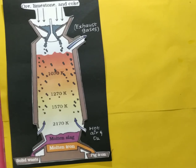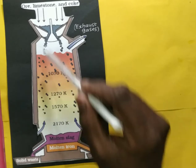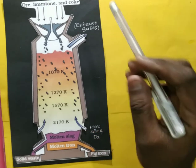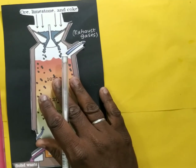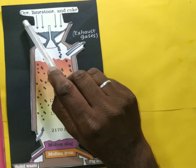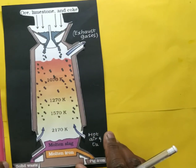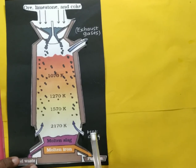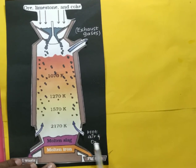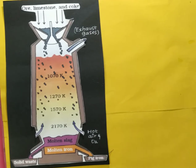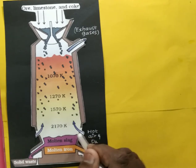What is the use of blast furnace? This is the setup of the blast furnace. Here, at the top, we are loading ore, limestone, as well as coke. In the bottom part, hot air and oxygen will be passed through tuyeres. Tuyeres are the specialized apparatus to give or blast air into this furnace.